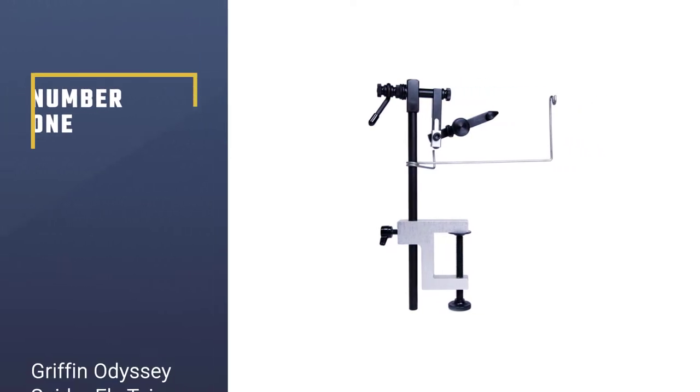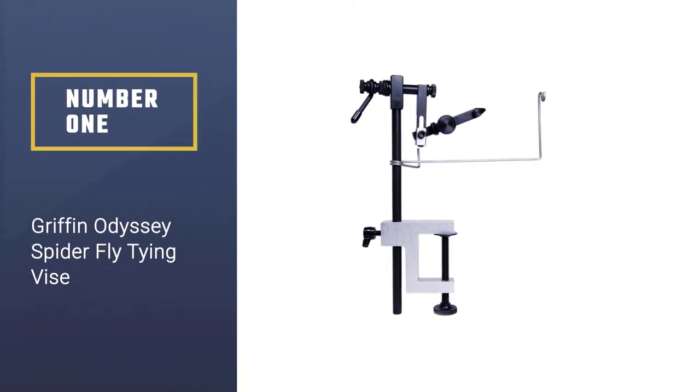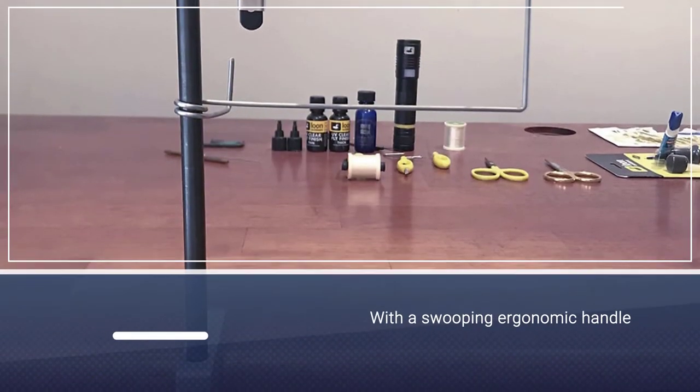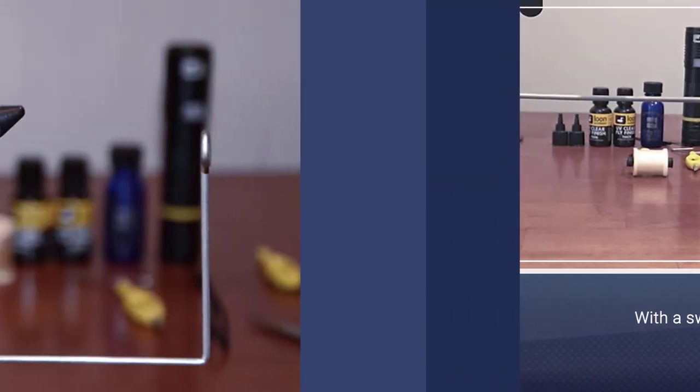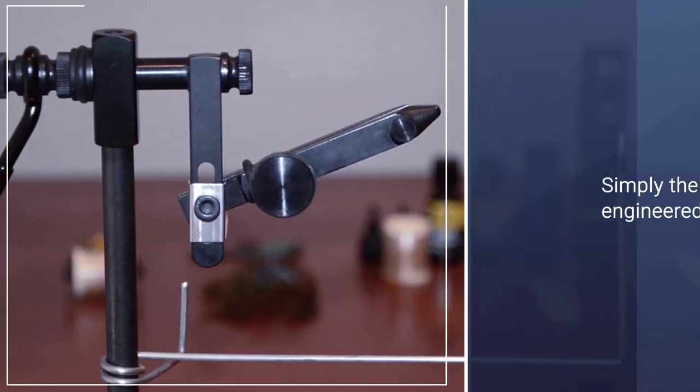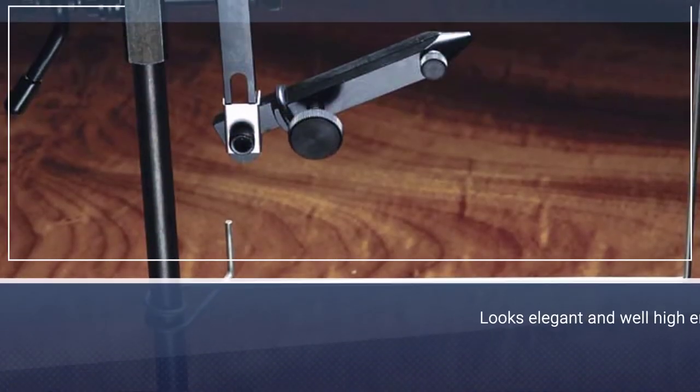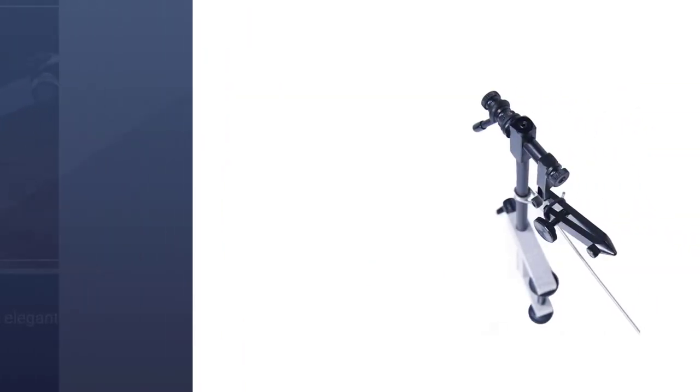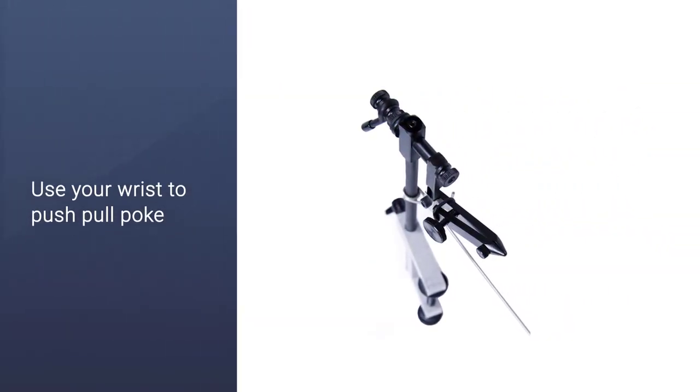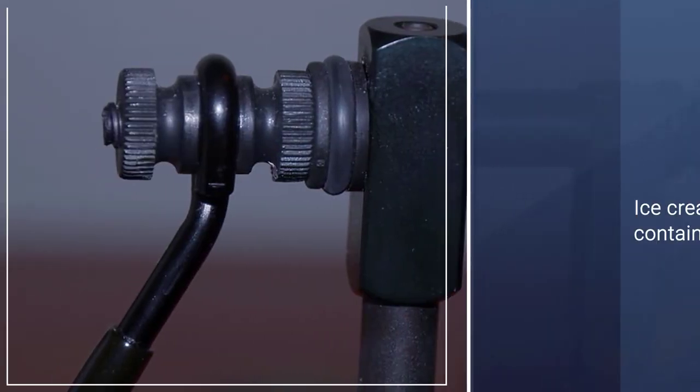Number one, most popular: Griffin Odyssey Spider fly tying vice. The Griffin Odyssey Spider vice is probably the best fly tying vice for the money if you are just getting started. It has everything you ask for in a fly tying vice: a bobbin holder, which is a prerequisite for a rotary vice, and 360-degree rotation. The advantage of a rotary fly tying vice is its versatility. The rotation enables you to tie more advanced flies more easily.